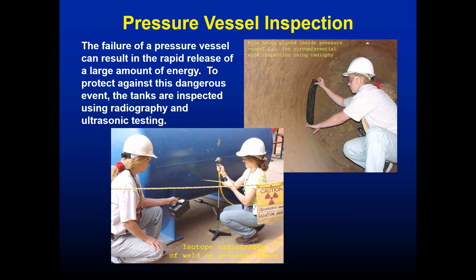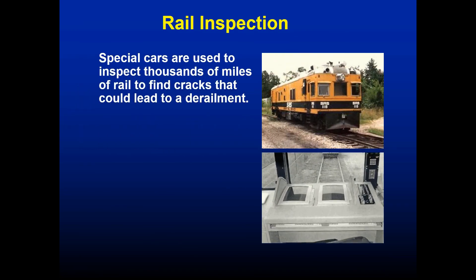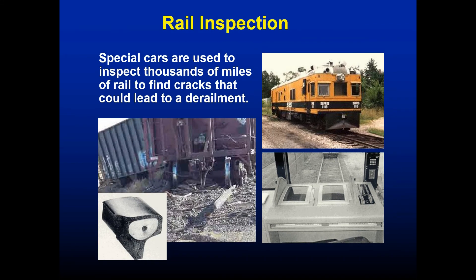Pressure vessels include compressor tanks, scuba bottles, propane tanks — both home and industrial — and natural gas tanks. These all undergo extensive inspection because failure results in a rapid release of a large amount of energy. Tanks are inspected using radiography and ultrasonic testing. Railroad line inspection also covers hundreds of thousands of miles of track in the United States alone, all of which must be inspected.